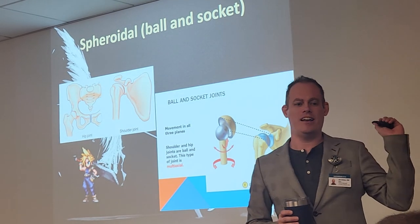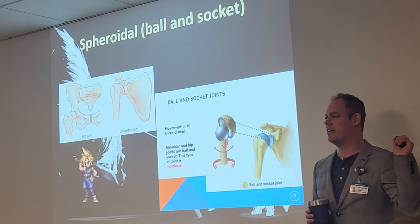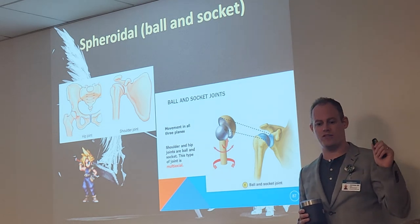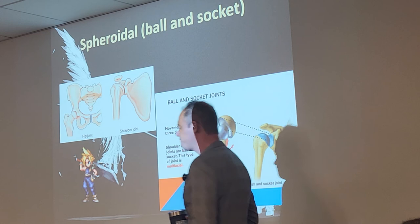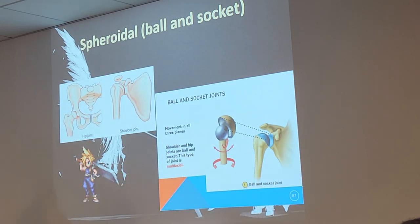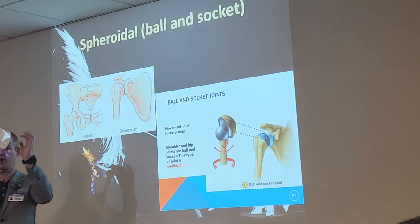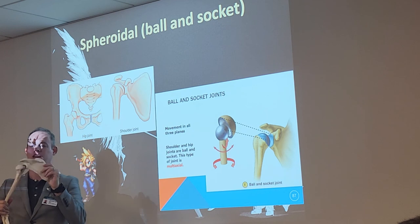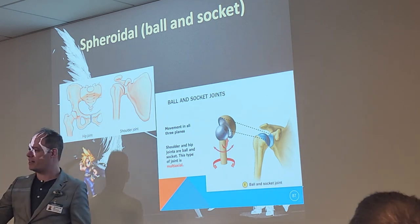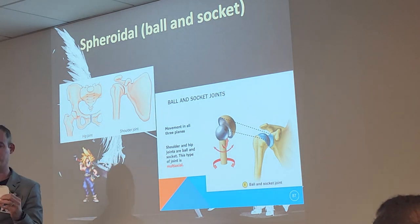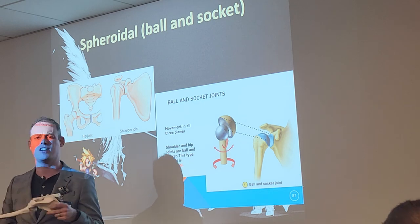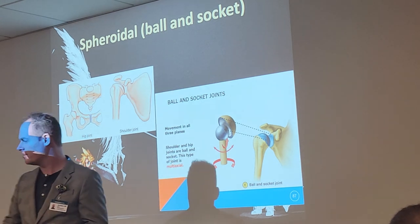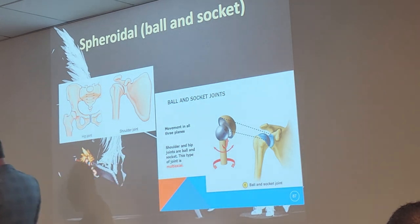Ball and socket joints — humerus to shoulder, femur to pelvis. It's an actual ball going into a socket. Looking at the arm model in front of you, that's the ball and socket action — an actual ball going into a socket, which allows you to move that arm around. This is a very commonly dislocated area of the body. When they pop it back into place, it makes a very unpleasant noise. The hip is the same — femur and the pelvis.